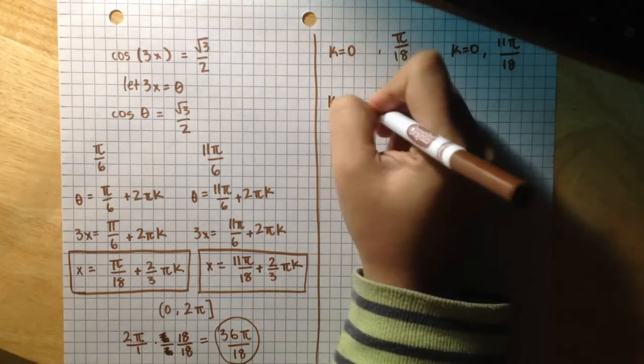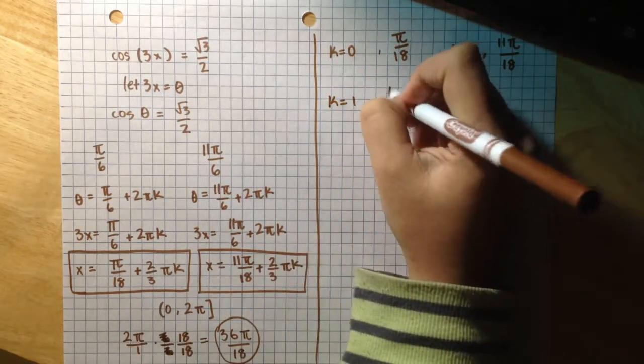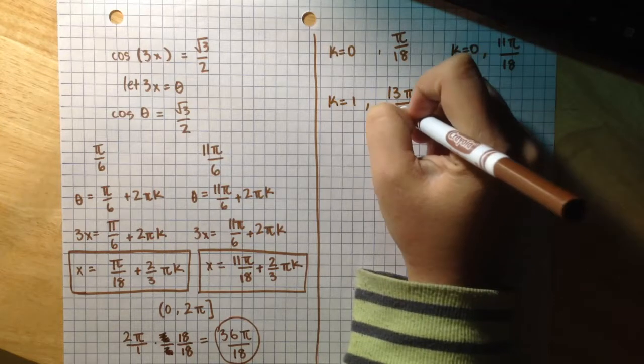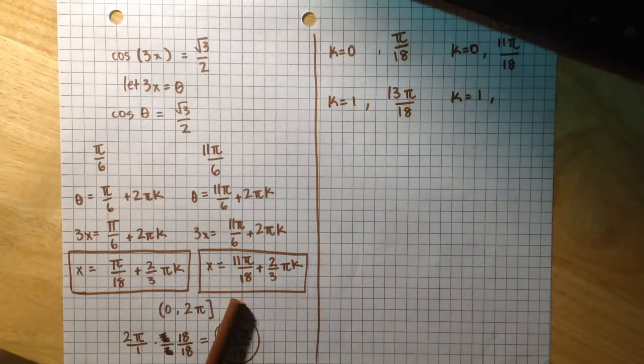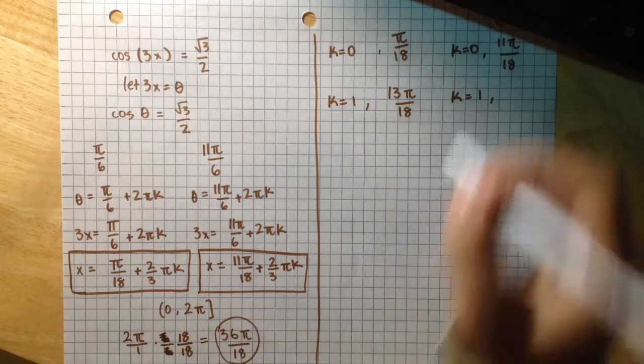k equals 1 in this equation will give us 13π over 18, and k equals 1 in this equation will give us 23π over 18.